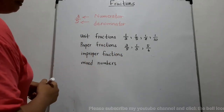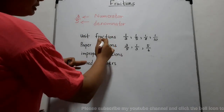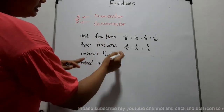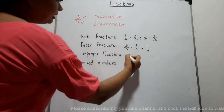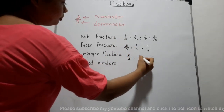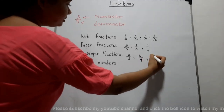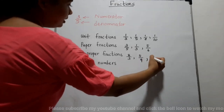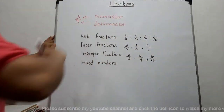For improper fractions, the denominator is less than the numerator — like 8 thirds, 5 fourths, 10 fifteenths, and so on.